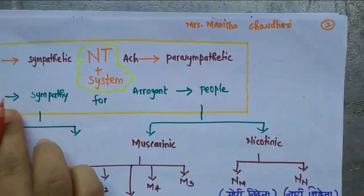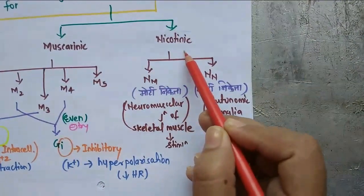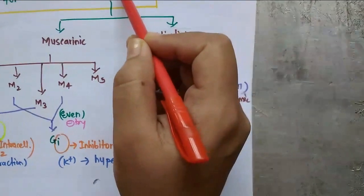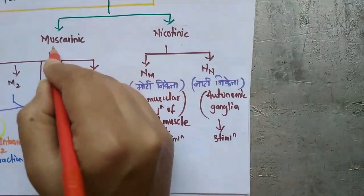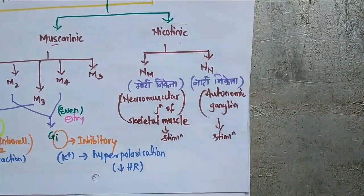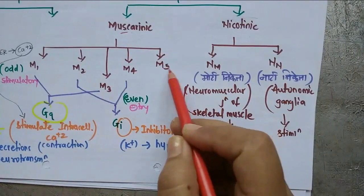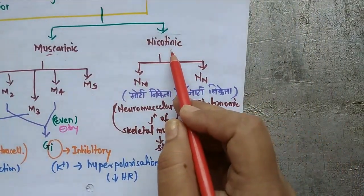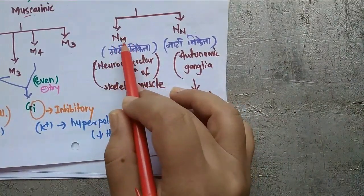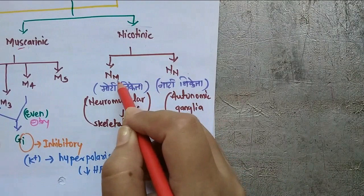The receptors involved in the parasympathetic system are muscarinic receptors and nicotinic receptors. To remember this, use the trick: 'Para hai to muska lagana hai' — parasympathetic has muscarinic and nicotinic receptors. Muscarinic receptors are further subdivided into five types: M1, M2, M3, M4, M5. Nicotinic receptors are further subdivided into two: NM and NN.